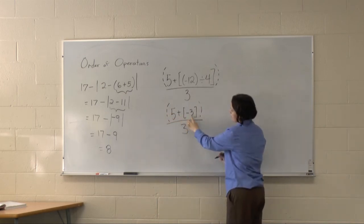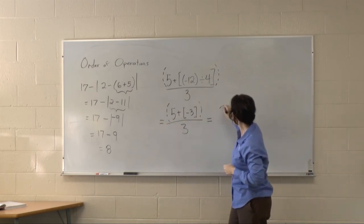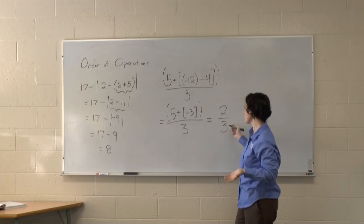And then 5 plus a negative 3 is positive 2. So the final answer is 2 thirds.